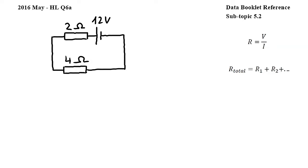I will start by using this equation from subtopic 5.2, where R total is the total resistance, and R1, R2 and so on are the resistances of individual resistors connected in series. So Rt, the total resistance of the circuit seen here, is equal to 2 plus 4 ohms, so 6 ohms.